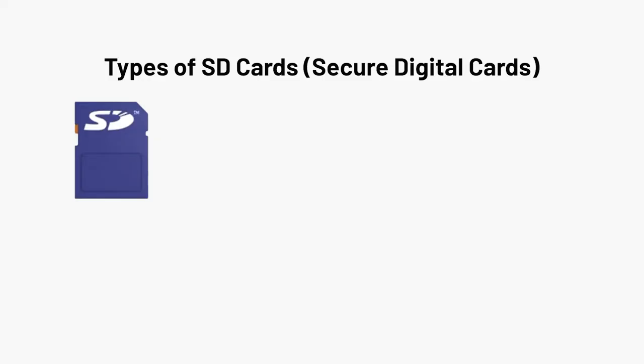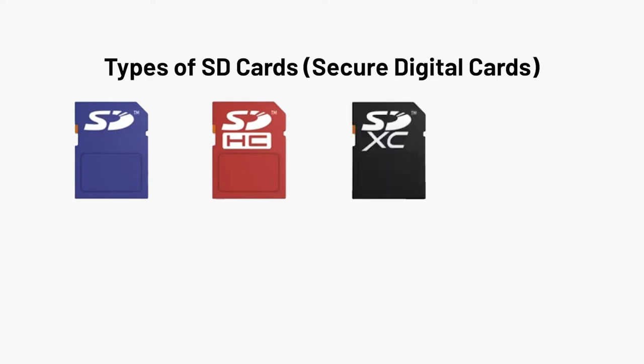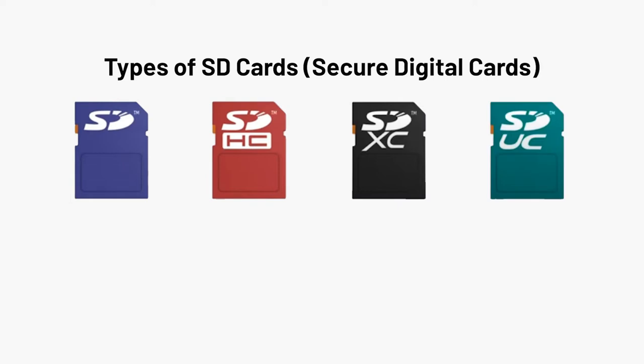There are now four types of SD cards. There is the original SD card — SD stands for Secure Digital. After the SD card came out, there was the SDHC, which stands for Secure Digital High Capacity. After the SDHC, we have the SDXC, Extended Capacity. And then finally, we have UC cards — these are Ultra Capacity Express cards that are in development.